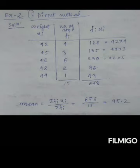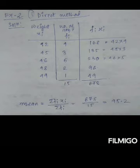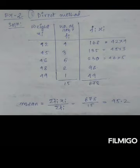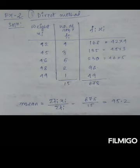For example, the first fi·xi value is 168 (that is 42 × 4), the next is 135 (45 × 3), and so on. After finding fi·xi for all rows, we add up two columns: summation fi·xi gives 678, and summation fi gives 15. Then we divide 678 by 15 to get the mean. This is the direct method applied to Example 2.